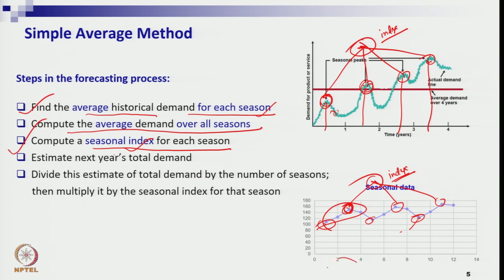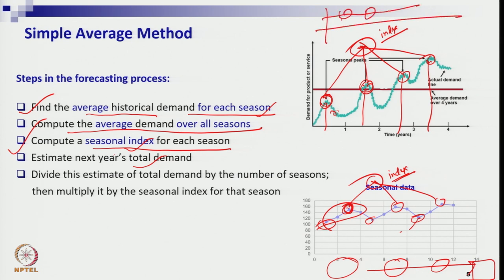Once you have the index, step four is to take the annual sales of each year and fit a trend line to predict the forthcoming year's annual demand. Step five: divide the annual forecast by the number of seasons to get the deseasonalized average forecast per period. Then multiply each period's deseasonalized forecast by its corresponding seasonal index to get the final seasonal forecast.